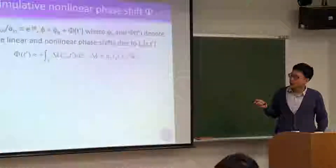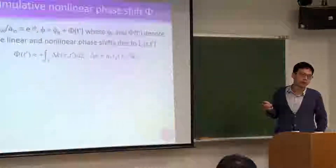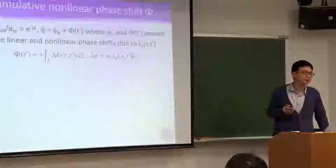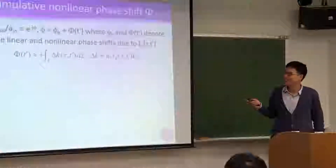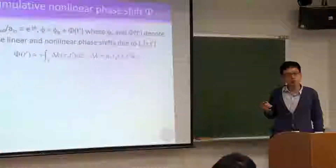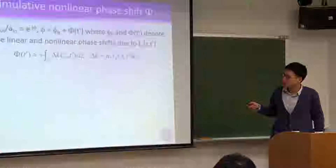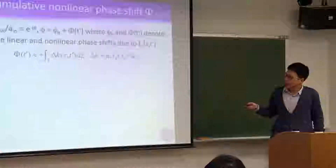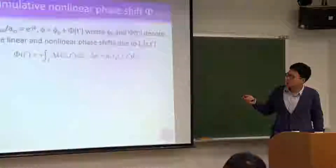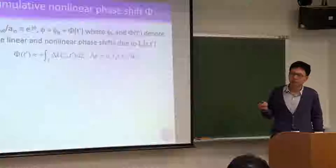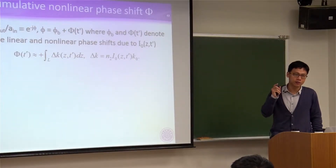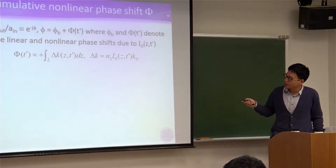But here, assuming delta k — the change of wave number due to the nonlinear optical Kerr effect — it's not a constant. Why is it not a constant? From the delta k formula: delta k, the change of your wave vector, is the n2 coefficient times your on-axis light intensity. So n2 times i gives the change of your refractive index, and thus the change of your wave number.